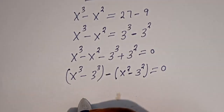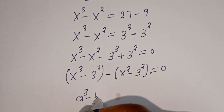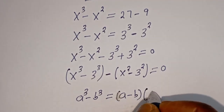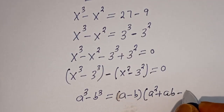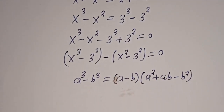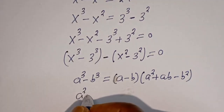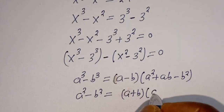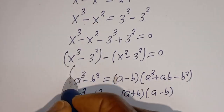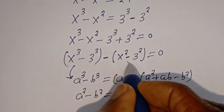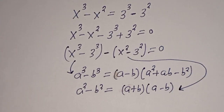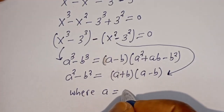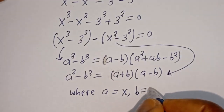Now take note of these exponential rules: if you have A to the power of 3 minus B to the power of 3, this equals A minus B, bracket, A squared plus AB plus B squared. Also if you have A squared minus B squared, this equals A plus B bracket A minus B. Here A is equal to S and B is equal to 3.